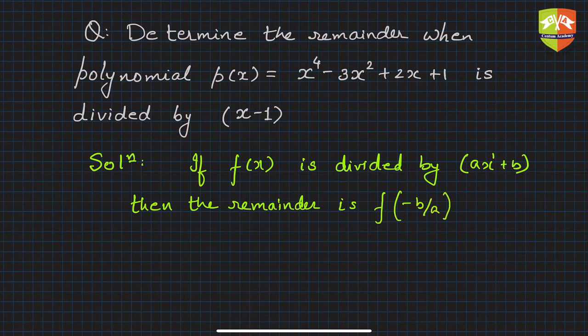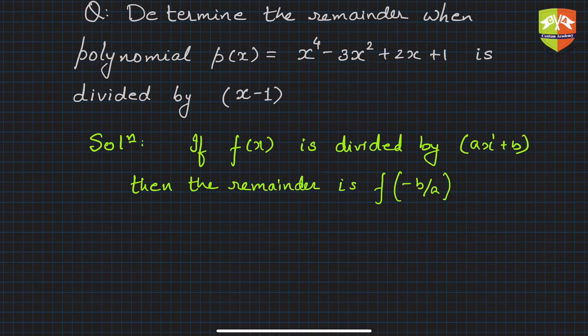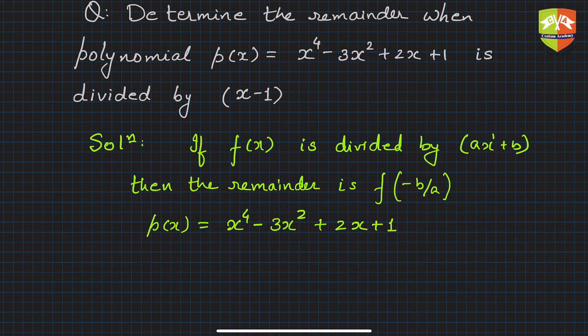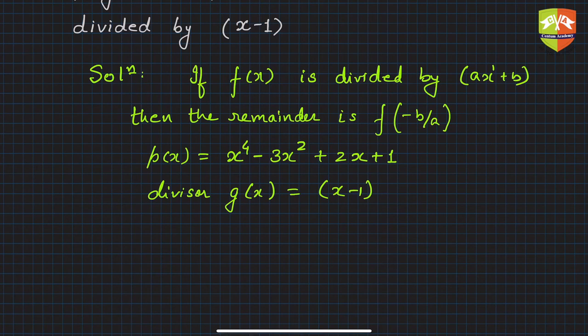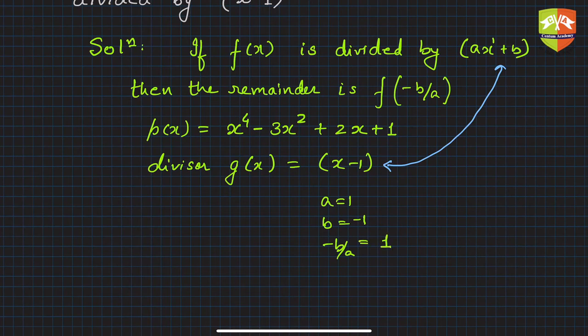That's what we discussed in the previous session. Now, in this case p(x) = x^4 - 3x^2 + 2x + 1, and our divisor g(x) = (x - 1). What are a and b? If you compare with the form ax + b, clearly a = 1 and b = -1, so -b/a is simply 1.